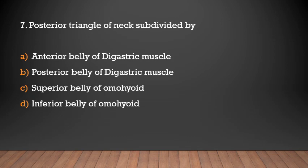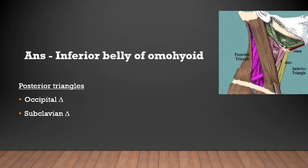The posterior triangle of the neck is subdivided by the inferior belly of omohyoid into two triangles: the occipital triangle, which is the large upper part seen above the inferior belly of omohyoid, and the subclavian triangle, which is the small lower part seen below the inferior belly of omohyoid.